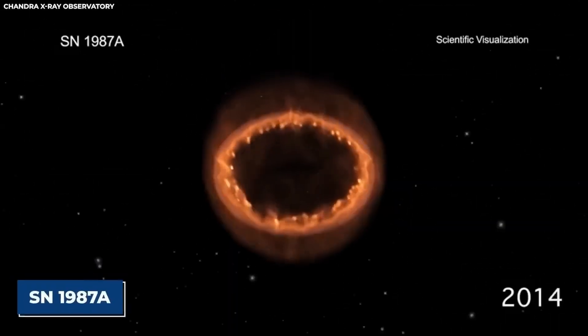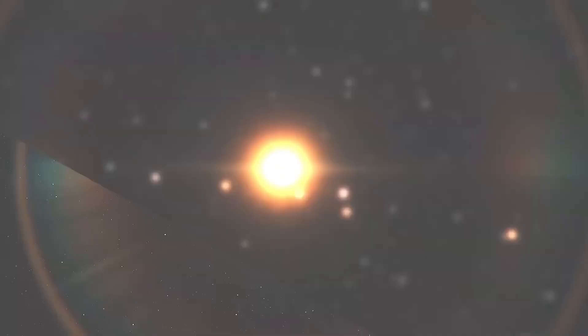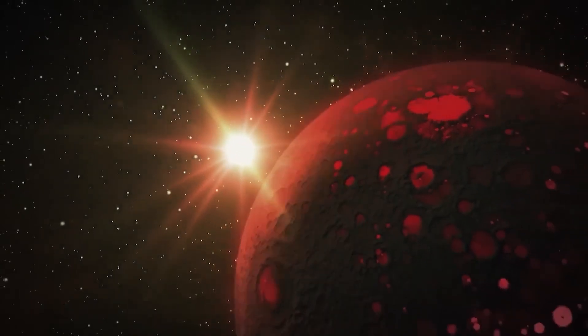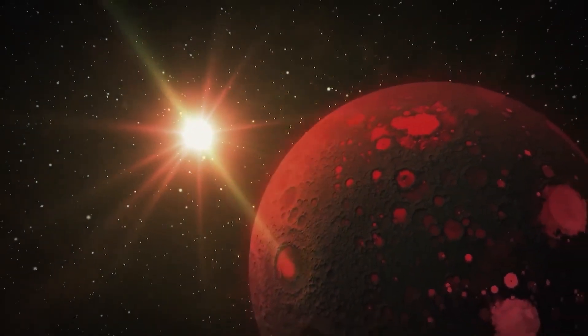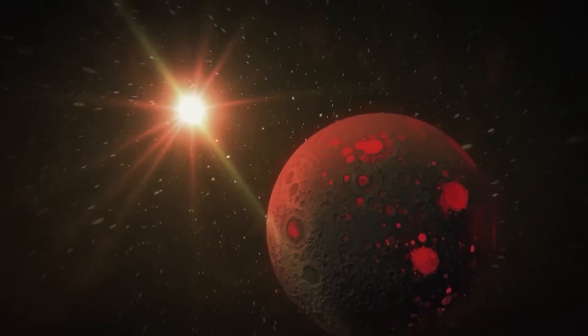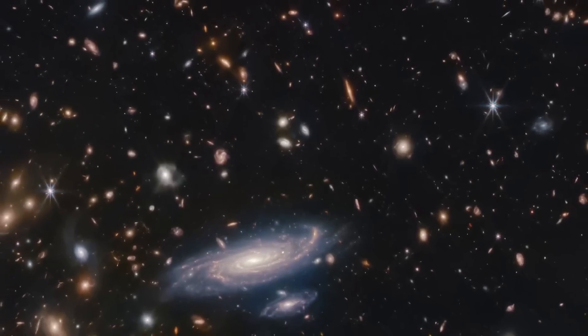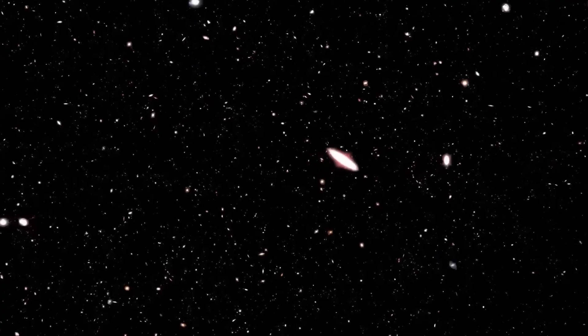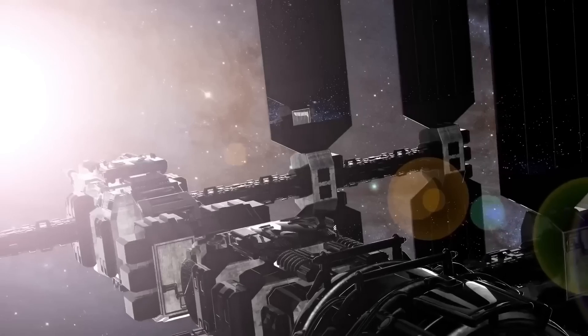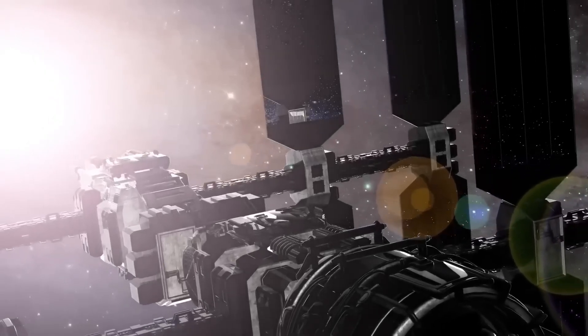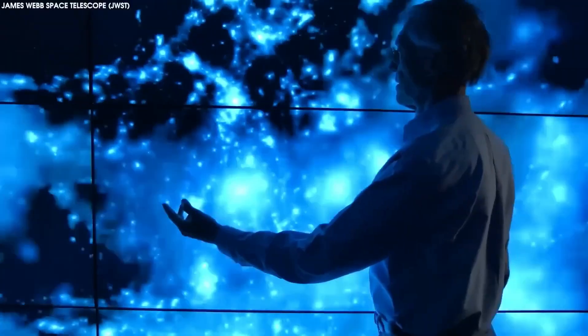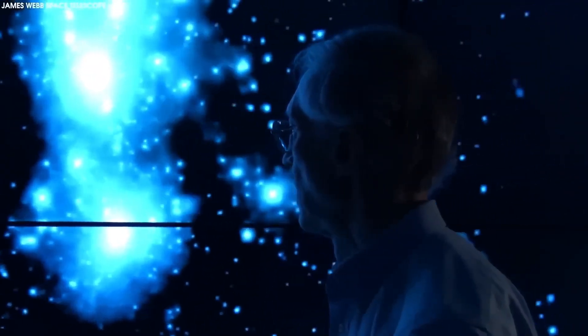Moreover, through observations of the Southern Ring Nebula, also known as the Eight-Burst Nebula, the JWST revealed a second star in the nebula's binary system, enhancing our understanding of its composition and dynamics. Each of these discoveries underscores the JWST's transformative impact on astronomy, pushing the boundaries of observational capabilities and delivering invaluable insights into distant celestial objects, galaxy formation, exoplanet atmospheres, and the early universe.